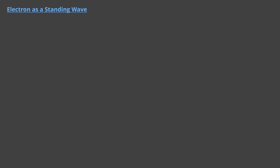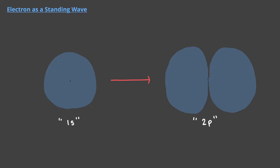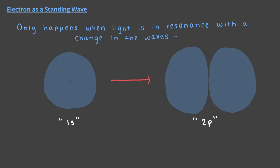We've already learned that an electron wave can be transformed into another shaped wave, but that this only happens when the light is in resonance with a change in the waves — when the frequency of the light's oscillating electric field catches a change in the shape and size of the electron wave. This process is called absorption.